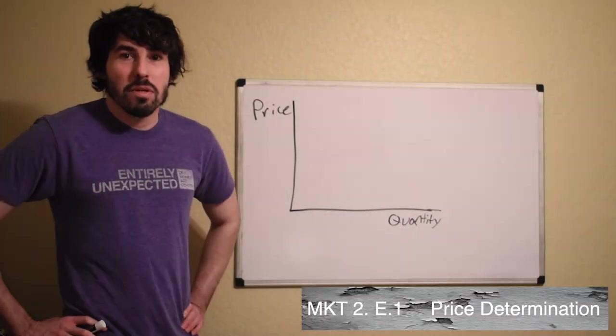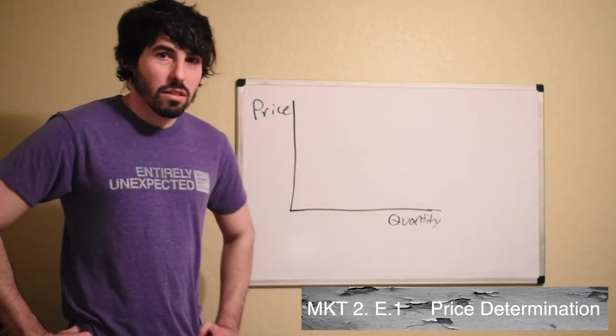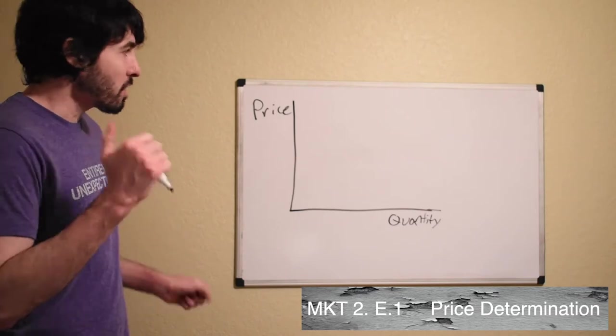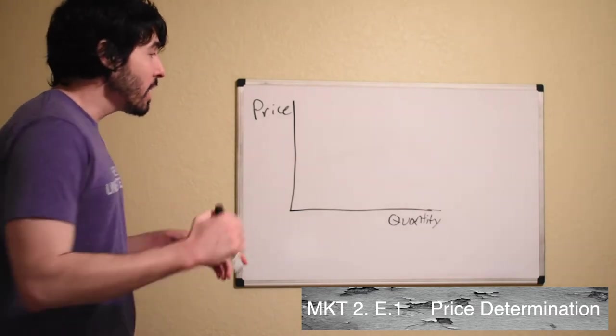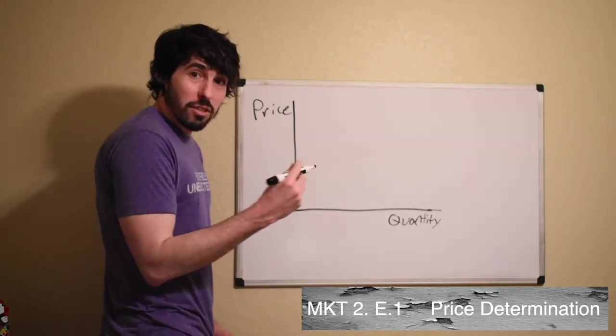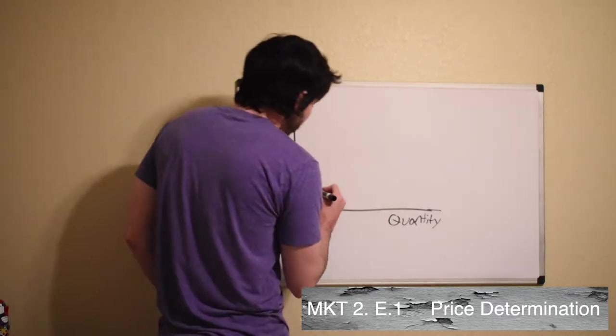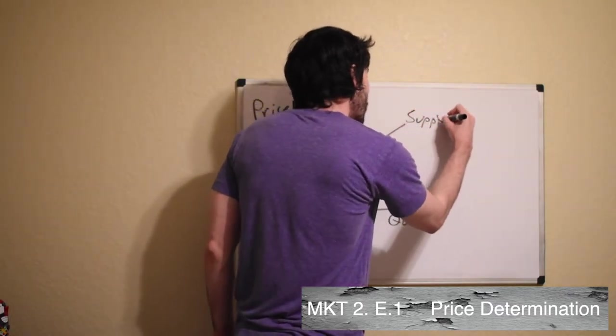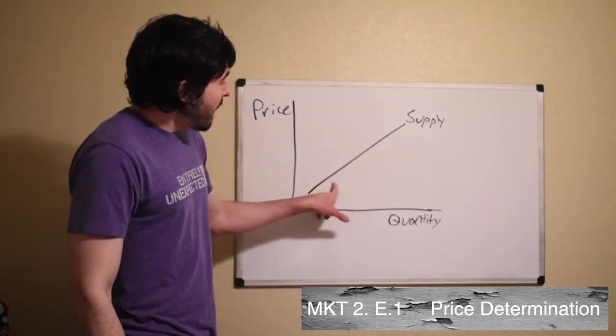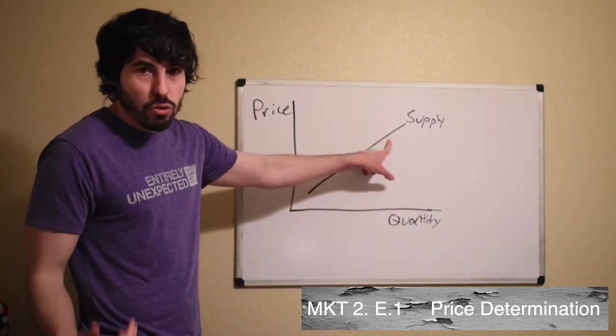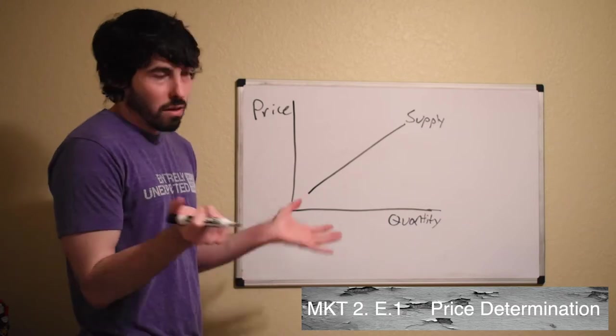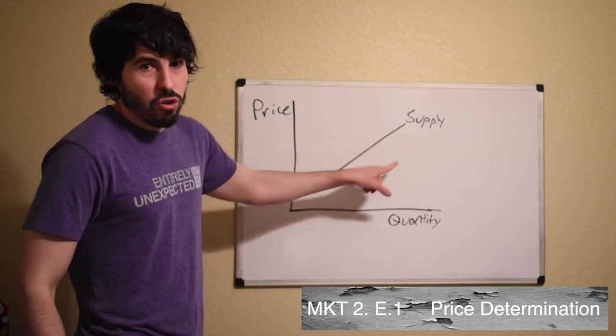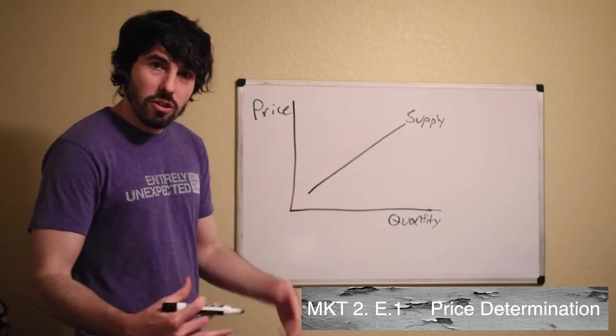Alright children, today we're going to be picking off where we left off last week. So last week I taught you about supply and demand on their own. This week I'm going to be talking about supply and demand together on one graph. Supply, as you recall, is upward sloping. As prices go up, producers want to make more of whatever product this is.